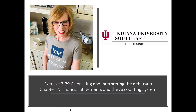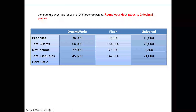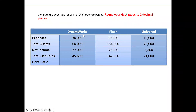In this video I'm going to demonstrate calculating and interpreting the debt ratio. We're asked to calculate the debt ratio for three companies: DreamWorks, Pixar, and Universal. We're given dollar amounts for expenses, total assets, net income, and total liabilities — a combination of information from our income statement, expenses and net income, and our balance sheet, total assets and total liabilities.